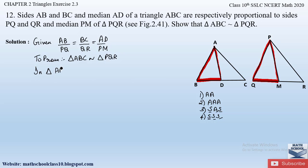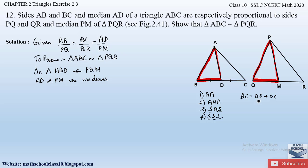In triangles ABD and PQM, AD and PM are medians. A median divides the opposite side into two equal halves, so median AD divides BC into two equal parts, giving BD = DC. Therefore BC = BD + DC = BD + BD = 2BD.